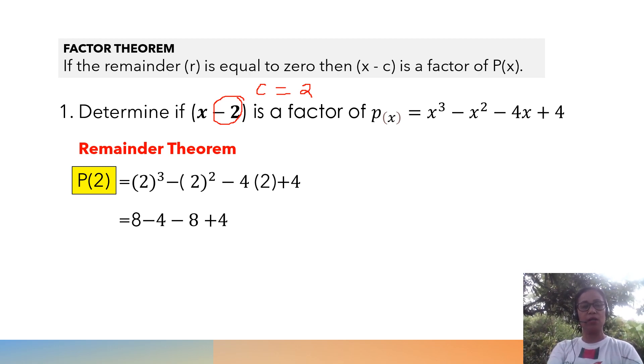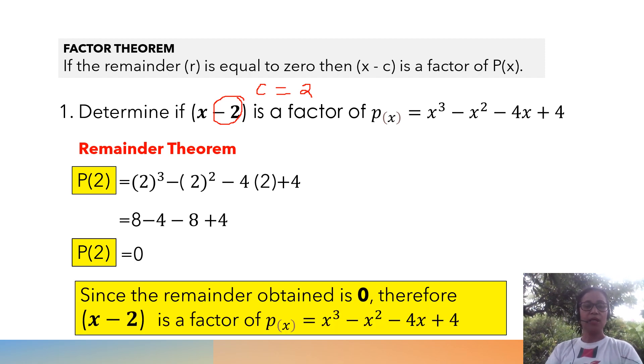Then we combine our integers, and we will get a value of 0. So P(2), or our remainder, has a value of 0. Since the remainder obtained is 0, therefore, x - 2 is a factor of the polynomial x³ - x² - 4x + 4.